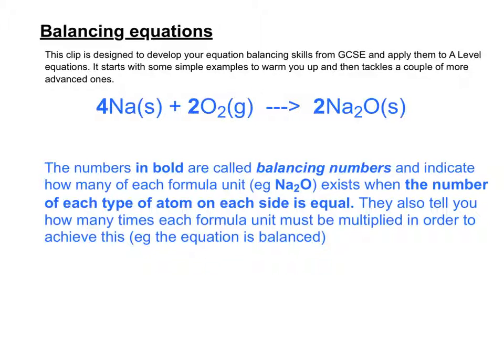We sometimes call a species a formula unit if we're talking about an equation. So we could have Na₂O as the formula unit for sodium oxide, Na is the formula unit for sodium, and O₂ on its own is the formula unit for oxygen gas.